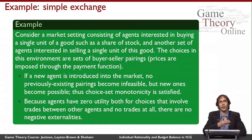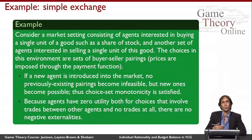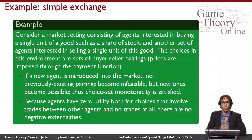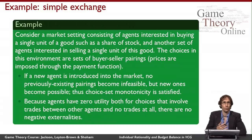If I add a new agent to the market, none of the pairings that worked before go away — they're all still possible because I can always set that new person aside. But I can also have that new person participate in trades that weren't possible without them. So choice set monotonicity is satisfied: new options become available when I add an agent, but no old options get ruled out. It's also natural to assume agents have zero utility for other people trading or not trading, so there are no negative externalities.